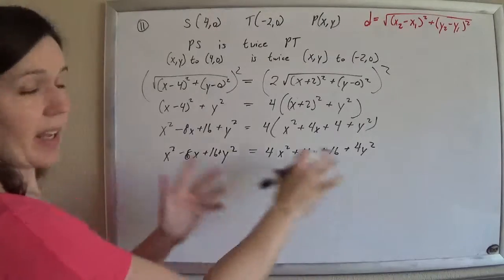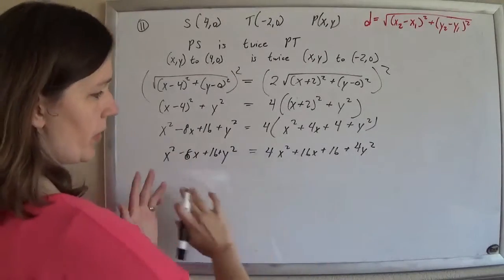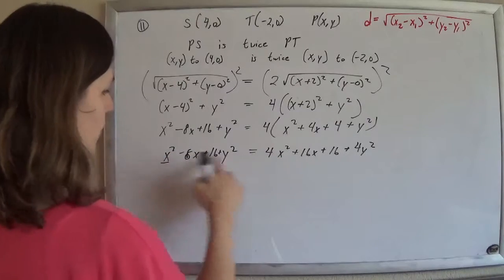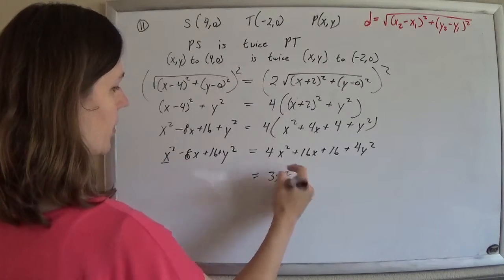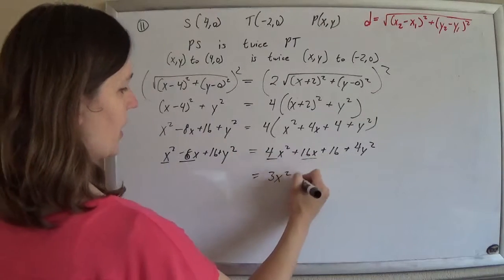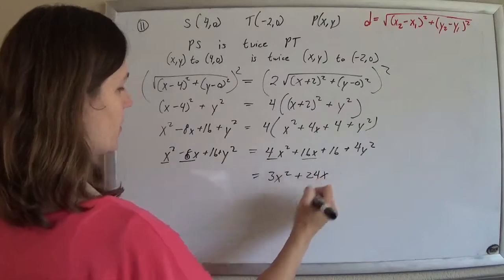And so now if I start to gather some like terms, maybe I'll throw everything onto this side and see what happens. So if I subtract x² from both sides, I'll get 3x² over on this side. If I add 8x to both sides, I'll get plus 24x over on that side.